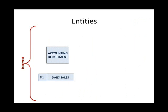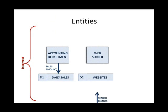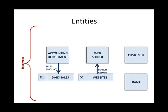These are incorrect examples. An entity and a data store cannot talk to each other directly — there must be a process in between. Similarly, two entities cannot communicate directly with each other. In a data flow, a process must always be part of any communication. That's the end of our lesson, thank you.